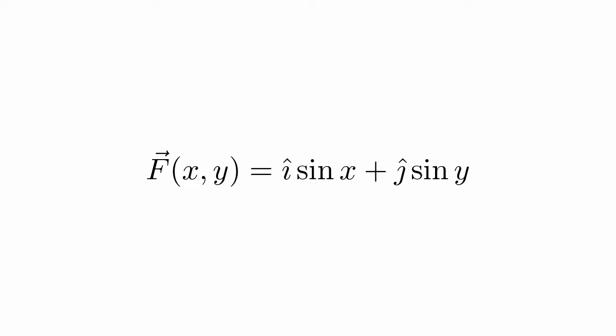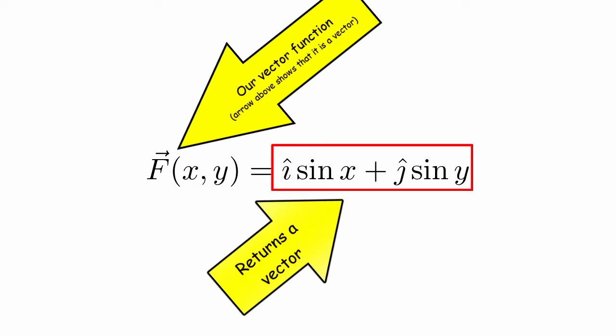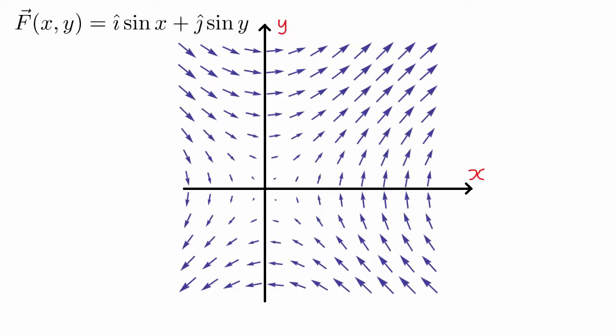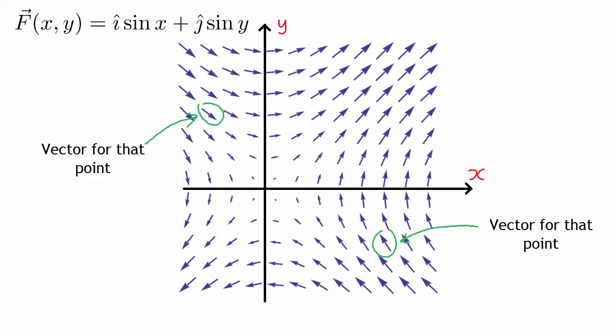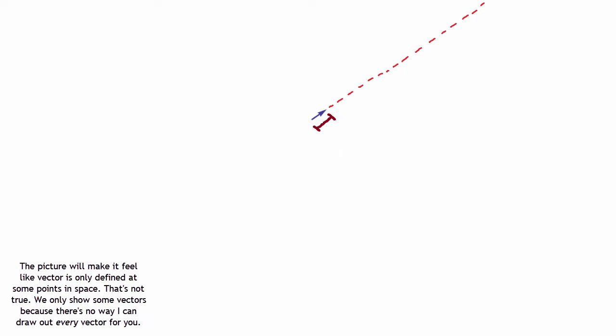A vector function, or vector field, is slightly different because rather than each point in space being assigned a certain value, they're instead assigned a certain vector. As you can see, each point in space will have some sort of a vector that points in some certain direction and has some certain size — something with direction and magnitude. You might see these graphs and they remind you of wind flow graphs in a weather forecast, so it's not a surprise when you think of vector fields as some sort of a flow.